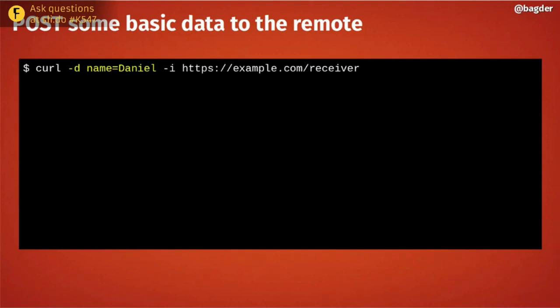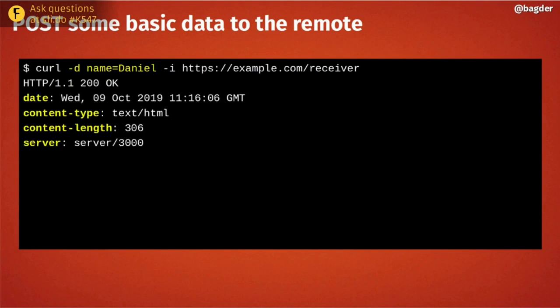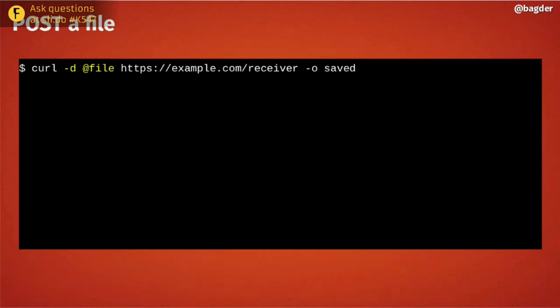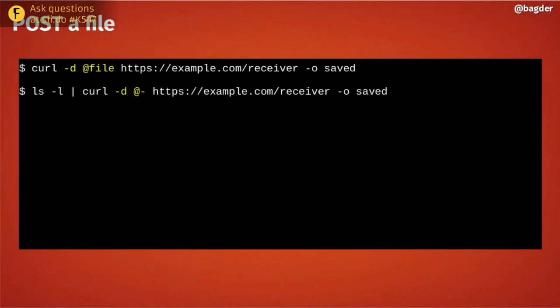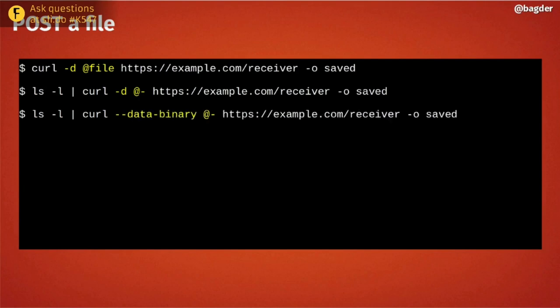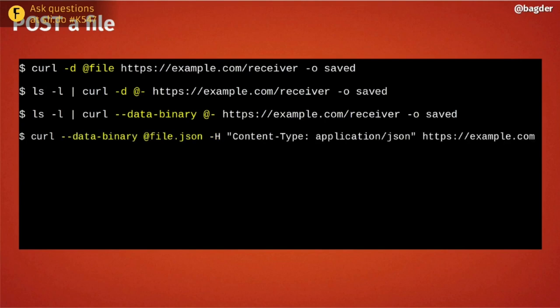To POST basic data, use dash-d. For example, to send 'name=Daniel' to a server, just use dash-d and that data, and curl makes a simple POST. You can POST a file by prefixing the filename with an at-sign, post from standard input with at-dash, or use dash-dash-data-binary to send a binary file exactly as-is without newline processing. You can combine this with a custom content-type header to tell the server you're sending JSON.